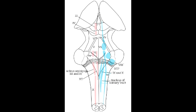What cranial nerves provide input to the nucleus solitarius? The cranial nerves that provide input to the nucleus solitarius include cranial nerves 7, 9, and 10. Cranial nerve 7 is the facial nerve, cranial nerve 9 is the glossopharyngeal nerve, and cranial nerve 10 is the vagus nerve.